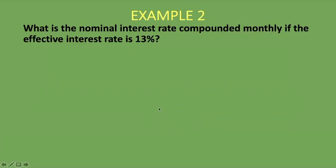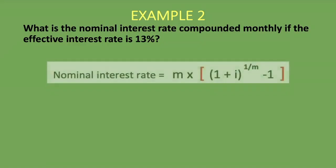For the second example: what is the nominal interest rate compounded monthly if the effective interest rate is 13%? Pause the video and attempt it yourself — that's how you gauge your understanding. Using the formula: m is 12 because there are 12 months in a year. We have 12 times (1 + 0.13) to the power of 1 divided by 12, minus 1.